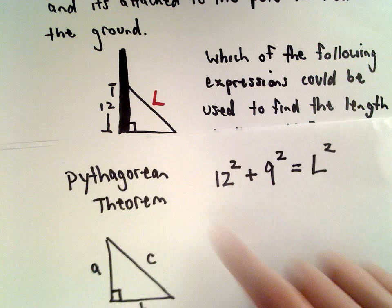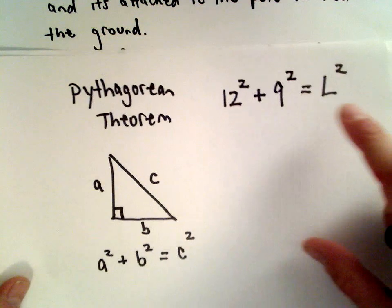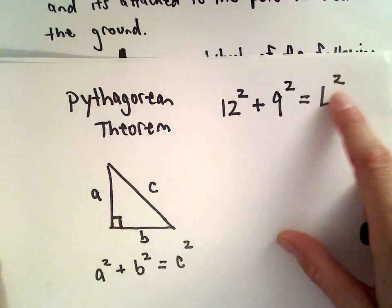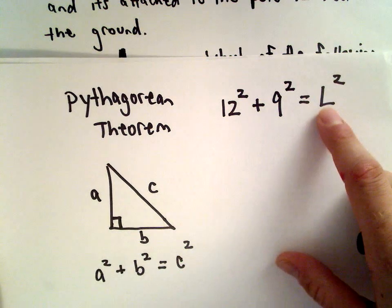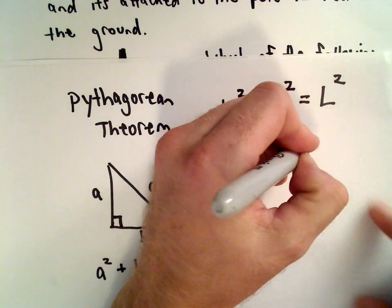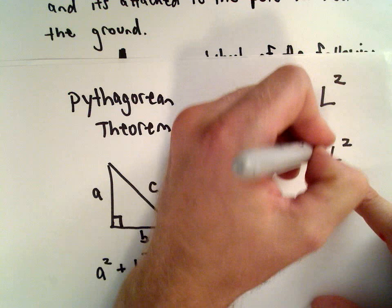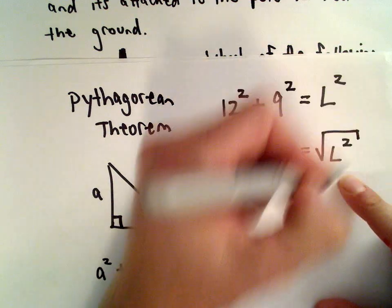We have to be careful because 12 squared plus 9 squared is one of the answer choices. But that's the length after we square it. We want the length, just the length. We don't want the length squared. Well, since we're squaring the length, to get L all by itself, we take the square root.